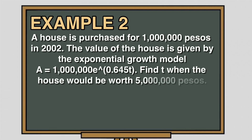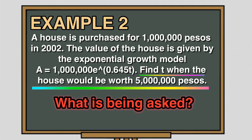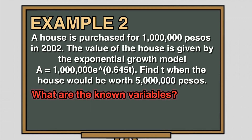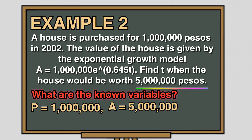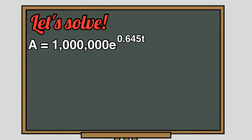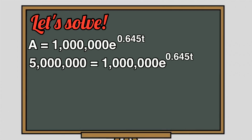Example: a house is purchased for 1 million pesos in the year 2002. The value of the house is given by the exponential growth model A equals 1 million times E raised to 0.645T. Find T when the house would be worth 5 million pesos. In this problem, we are asked to find T, which is the number of years before the house would be worth 5 million pesos. The known variables are P equals 1 million pesos and A equals 5 million pesos. Using the model, we have 5 million equals 1 million E raised to 0.645T. Our goal is to find T, so we have to eliminate 1 million at the right side of the equation.